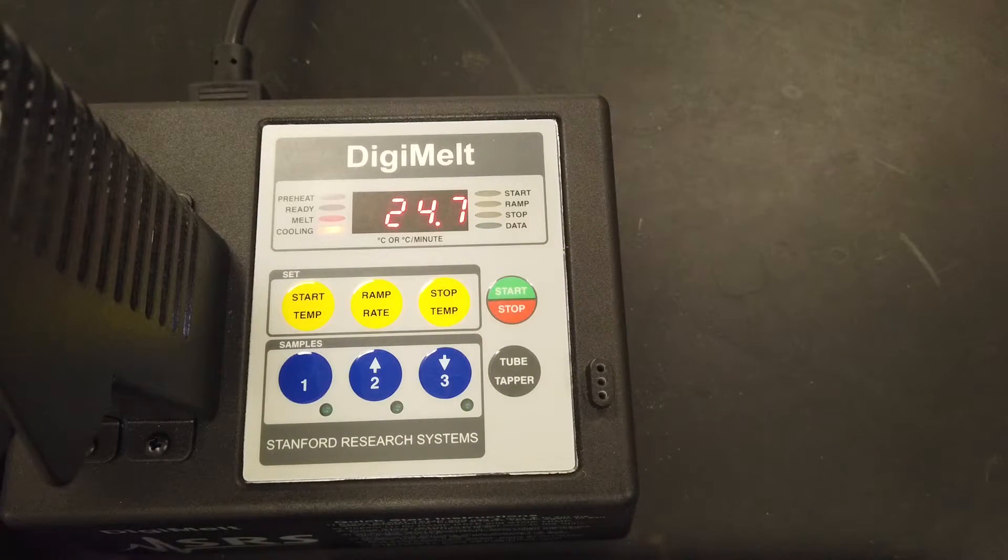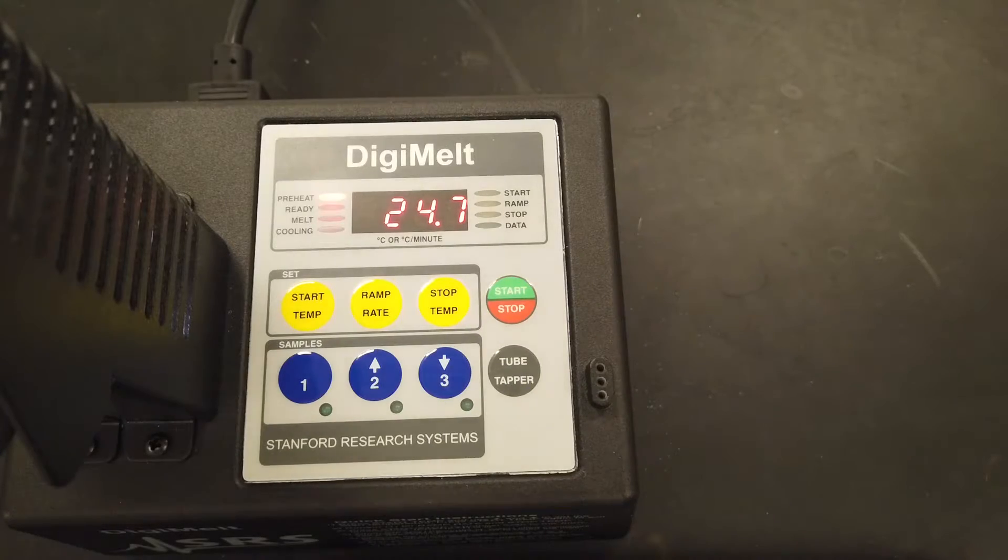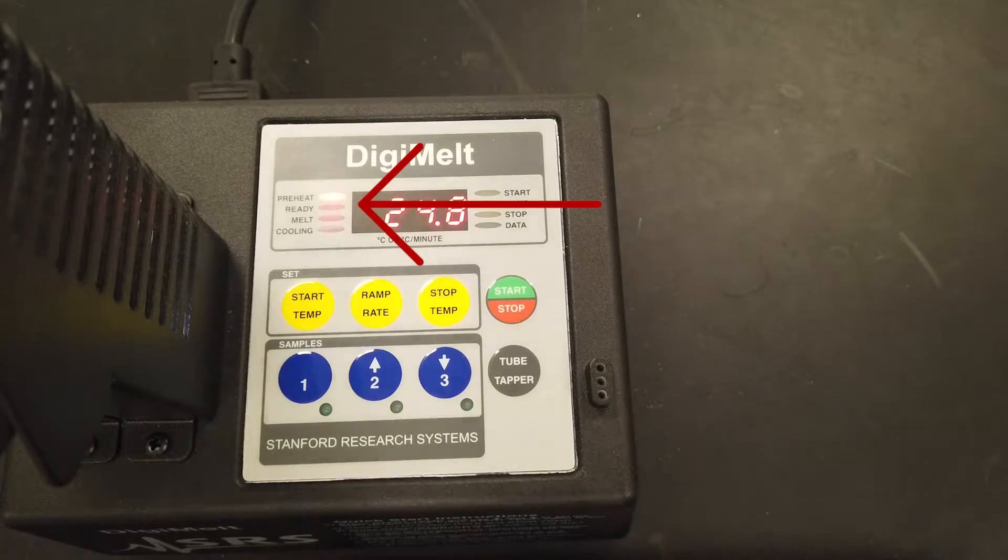Once you've entered the parameters, press the start button again and the Melt-Temp will begin to preheat as indicated by the red light next to the preheat label.